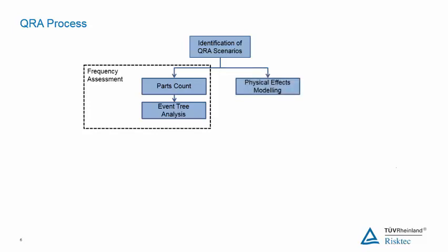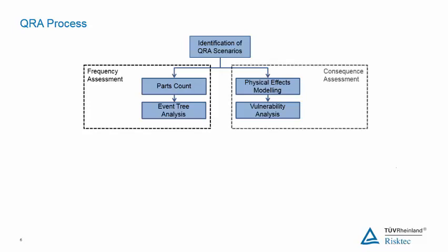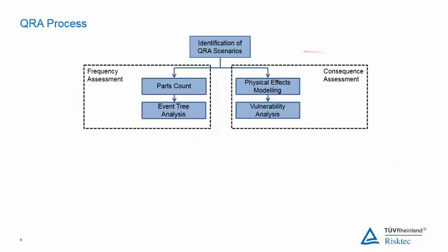The potential consequences of the identified scenarios are calculated through physical effects modelling, which predicts the size of the gas cloud, jet fire, or explosion. The consequence modelling enables the consequences of a release to be quantified and determines the impact on people in terms of the probability of fatality. These aspects together form the consequence part of the QRA. Linking back to the earlier definition of risk, the frequency assessment is the probability part of the calculation, and the consequence assessment is the consequence part of the calculation.